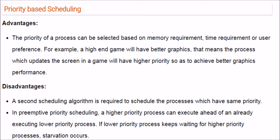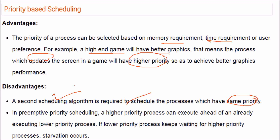Priority-based scheduling allows priority to be set based on memory requirement, time requirement, or user preference. For example, a screen-updating process in a high-end game gets higher priority for better graphics performance. A disadvantage is that when processes share the same priority, FCFS is used as a tiebreaker. In preemptive priority scheduling, a higher-priority process can preempt a running lower-priority one, which can cause starvation for low-priority processes.